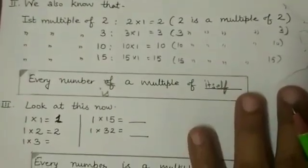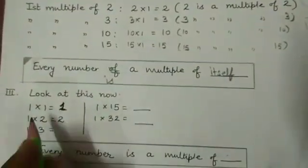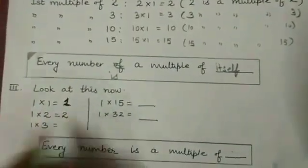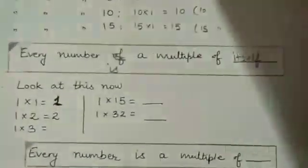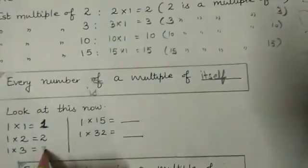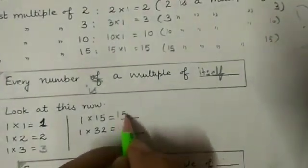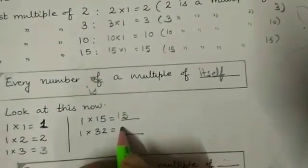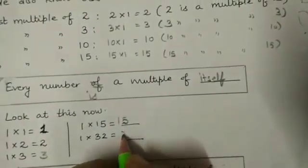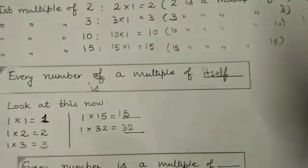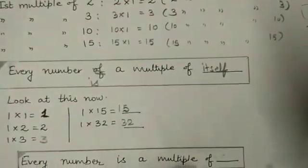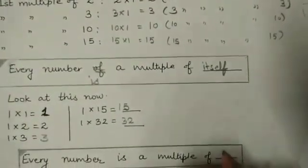Now look at the next number. 1 multiplied by 1 is 1. 1 multiplied by 2 is 2. 1 multiplied by 3 is 3. 1 into 15 is 15, 1 into 32 is 32. So what we are concluding from here? Every number is a multiple of 1.